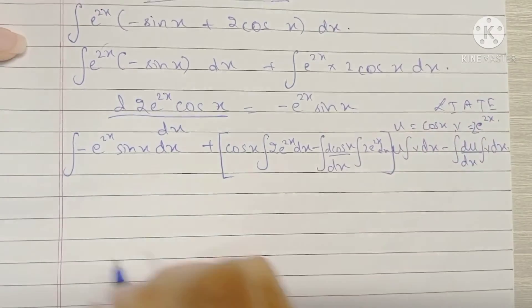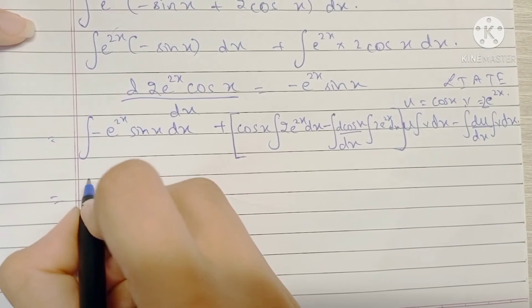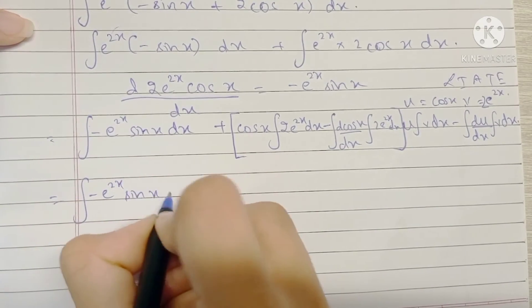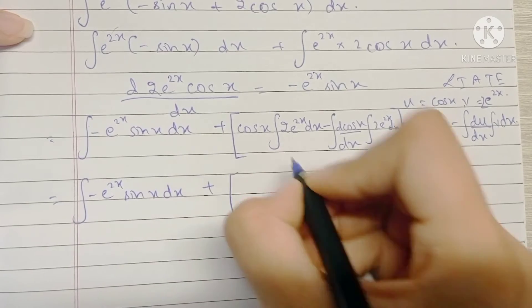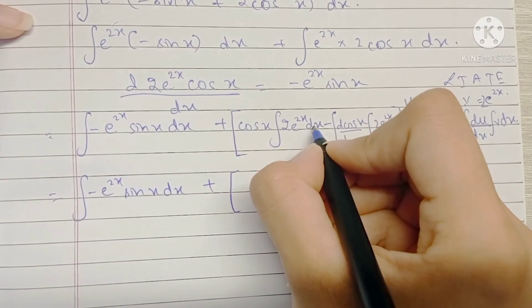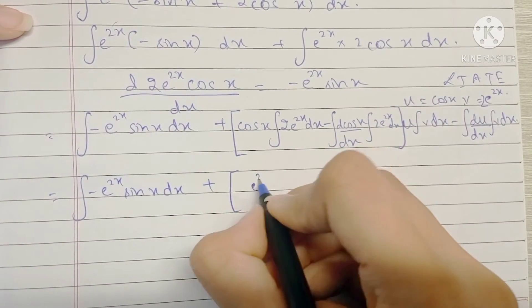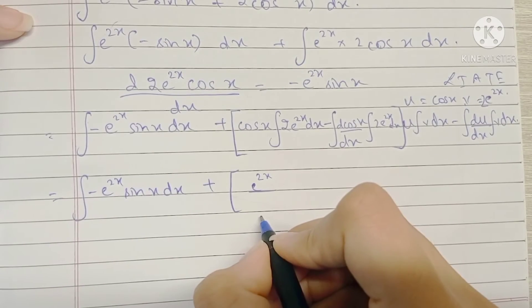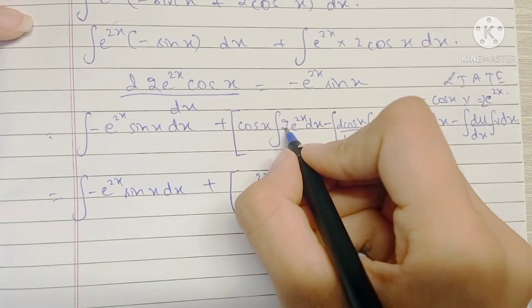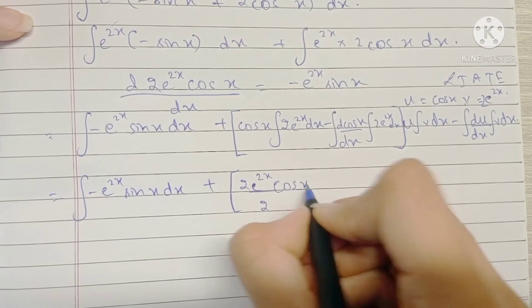Okay, so this integral remains as it is and the integral of e raised to 2x would be e raised to 2x upon the coefficient of x which is 2. This constant remains as it is and this is cos x.